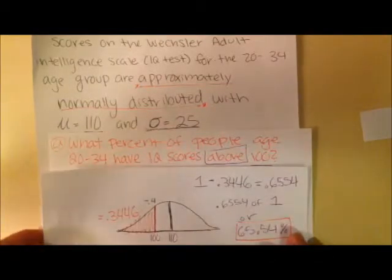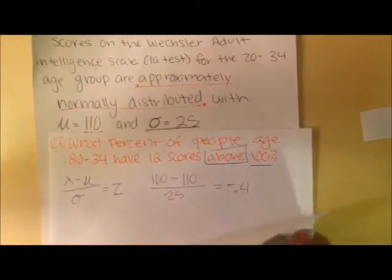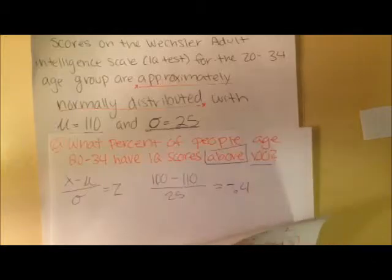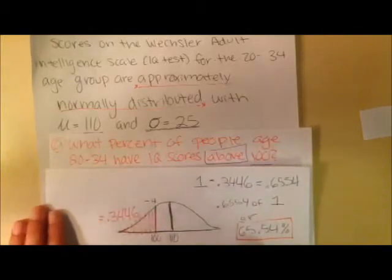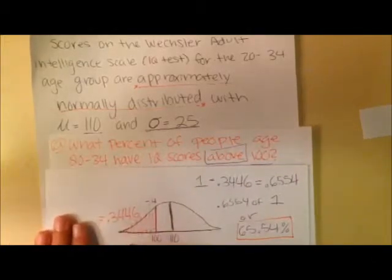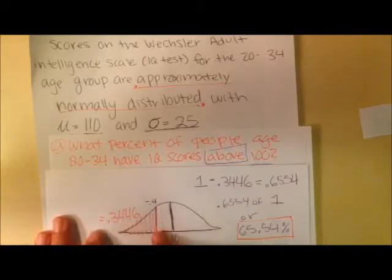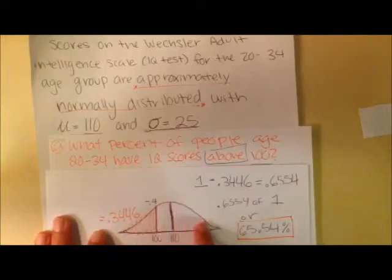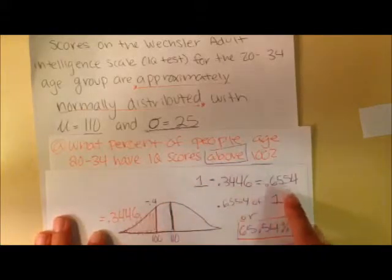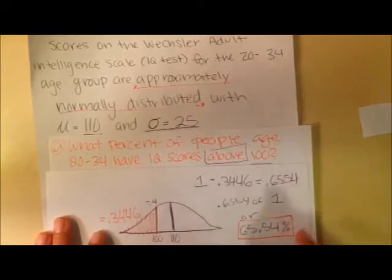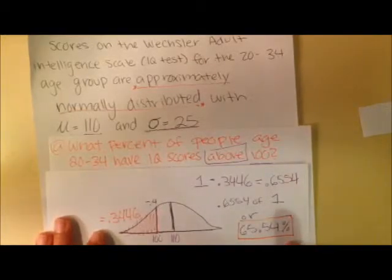Just a quick recap of how we did this. We took the Z score of our given value, which was negative 0.4. We plugged that into the table, and we're given the area of this distribution curve from 0 to 100, our given value. We took that area and subtracted it from the total area, which is 1, which gave us 0.6554. And we turned that into a percent, and that was our answer.